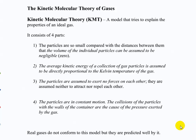The average kinetic energy of a collection of gas particles is assumed to be directly proportional to the Kelvin temperature of the gas. Temperature is directly proportional — have you seen that symbol before? It's sort of like equals, but not equals. Equals implies an equation you solve; proportional just means it varies with.